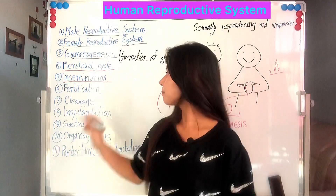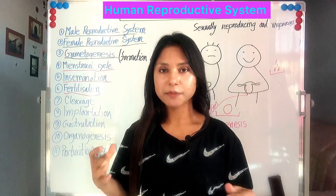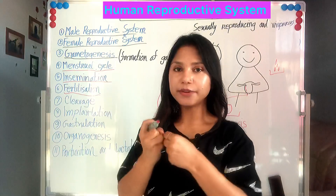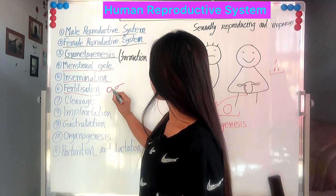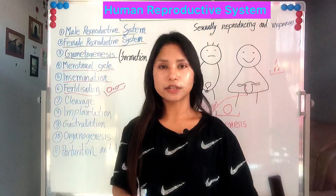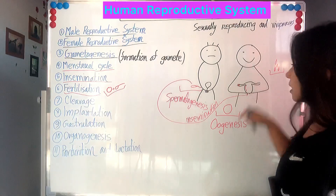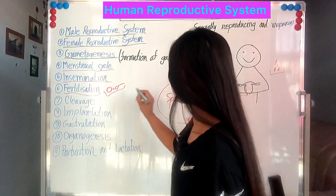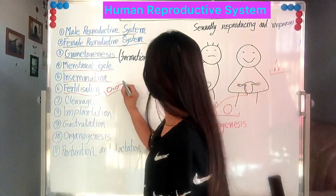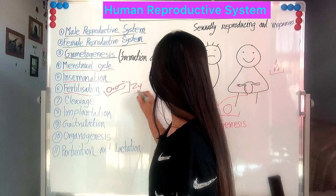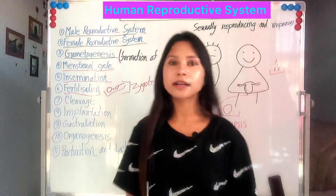Next is fertilization. If the female gamete meets the male gamete and they fuse together, that is called fertilization — ovum meets with sperm and they fuse. Fertilization occurs here in the fallopian tube. After fertilization, the ovum and sperm meet together and form a zygote. The zygote is a single cell, and this single cell will eventually make one human being.